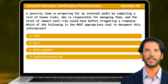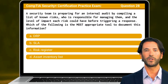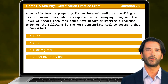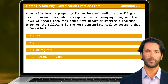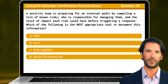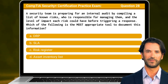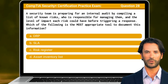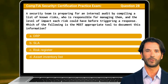Question 28. A security team is preparing for an internal audit by compiling a list of known risks, who is responsible for managing them, and the level of impact each risk could have before triggering a response. Which of the following is the most appropriate tool to document this information?